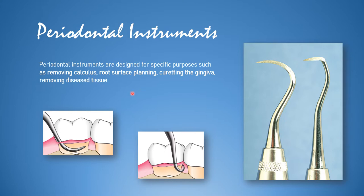In this picture you can see a curette being used for root planing on the buccal and lingual surfaces, and here it is done in the proximal areas. These are some periodontal instruments such as universal scalers and sickle scalers that we'll be discussing in the next slides.